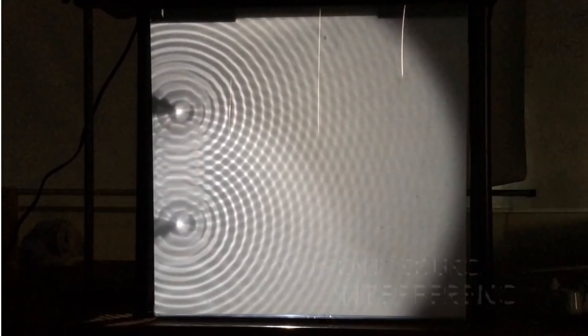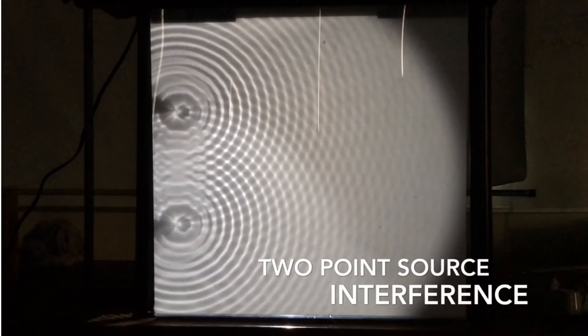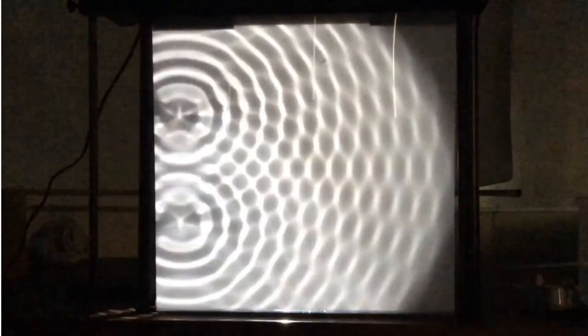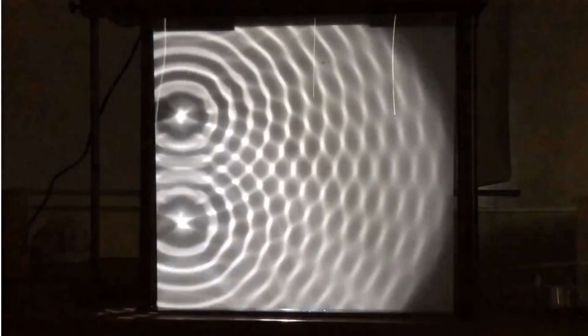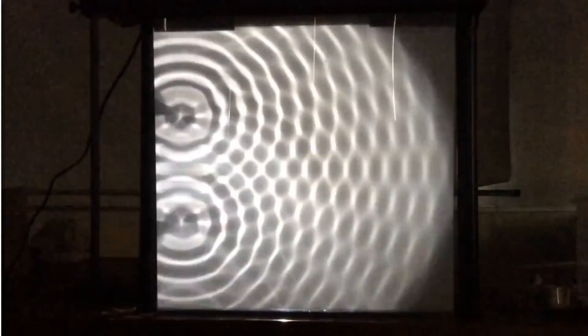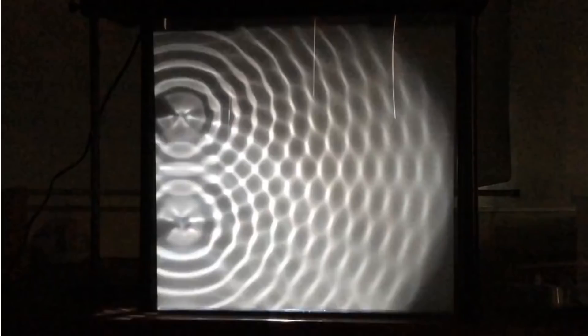Now we're going to look at the interference of two point sources. So we've just got two points producing waves, and then we've got them overlapping and superposing on one another. That's the word we use to describe two wavefronts meeting and their amplitudes combining.